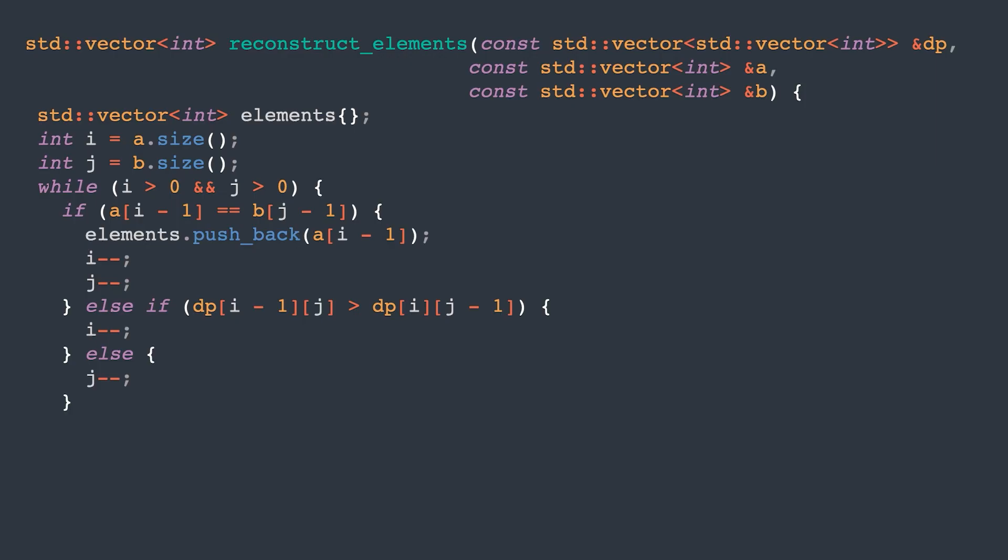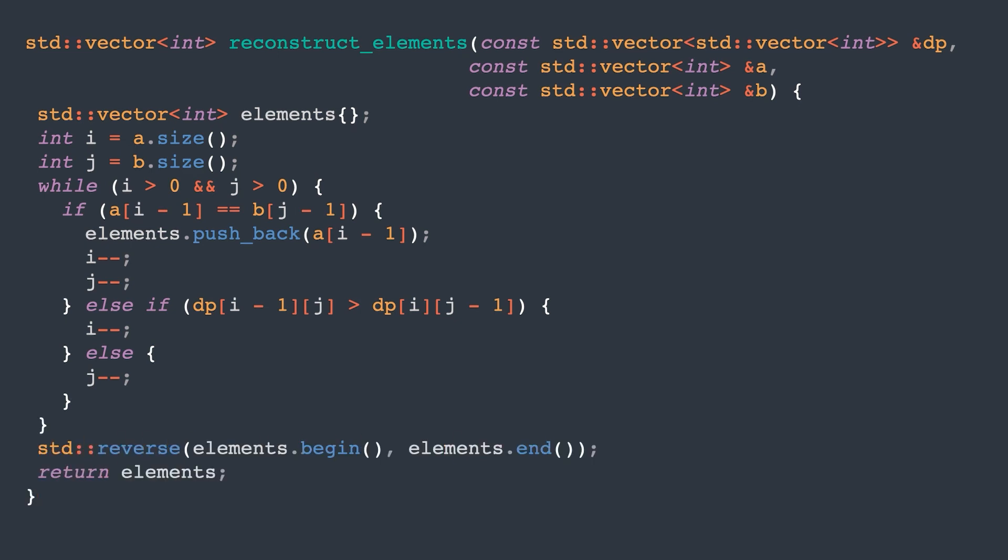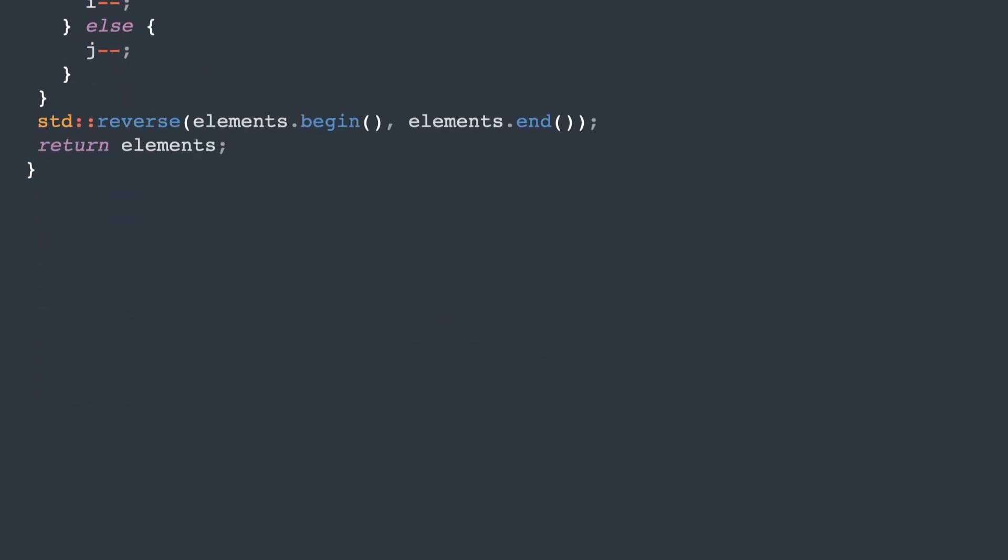Note that in this implementation we drop the element from array B if there are multiple solutions, which in practice means we choose the rightmost element from array A. Since we've added the elements in the reverse order, let's reverse them to get the actual one. Let's also run this on a couple of tests.